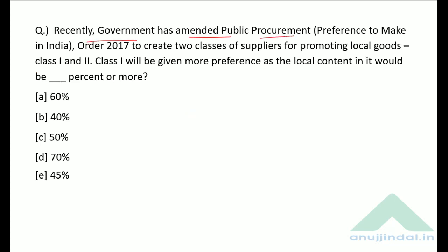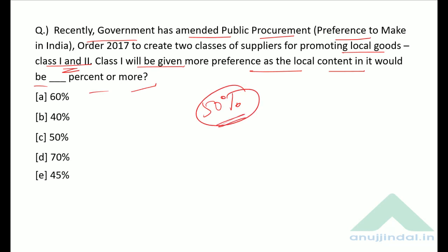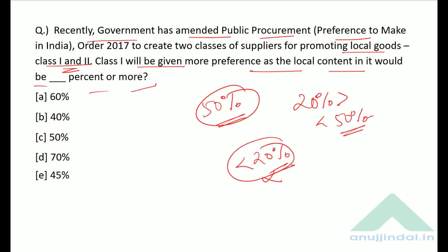The government recently amended the Public Procurement Preference to Make in India Order 2017 to create two classes of suppliers for promoting local goods — class 1 and class 2. Class 1 will be given more preference where local content is 50% or more. Class 2 covers local content between 20% and 50%. If local content is less than 20%, it will not be recognized as a local product. The correct answer is option C, 50%.